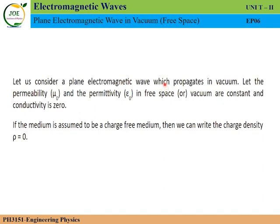Let us consider a plane electromagnetic wave traveling in vacuum. Vacuum travel involves permeability and permittivity. Permeability is a property related to the magnetic field, and permittivity is the permitting ability of the electric field. The medium has a permitting ability, and this value exists in every medium.